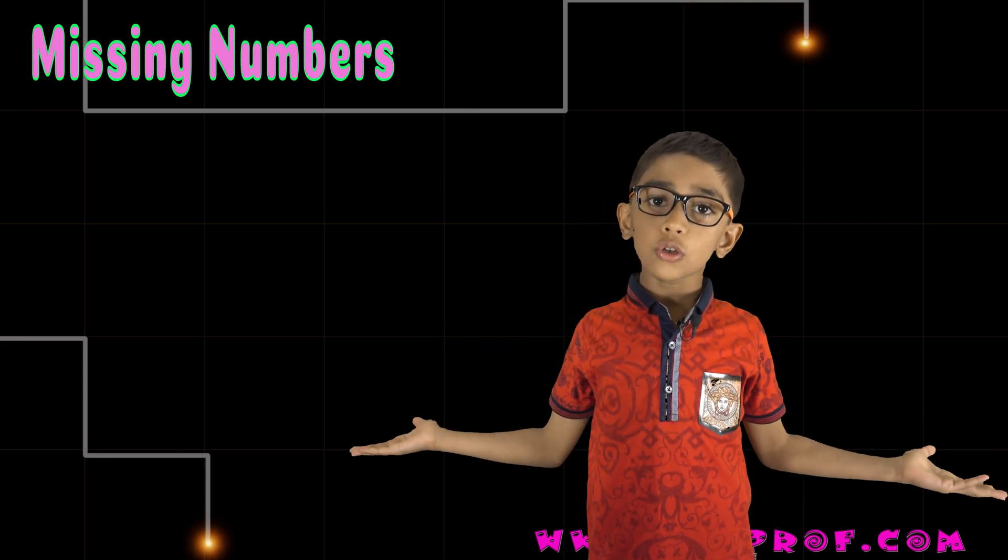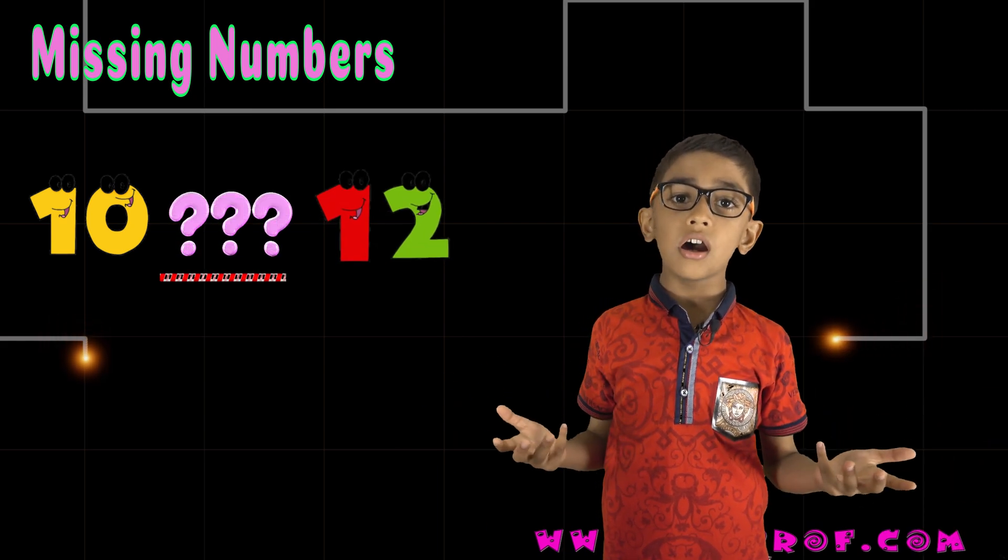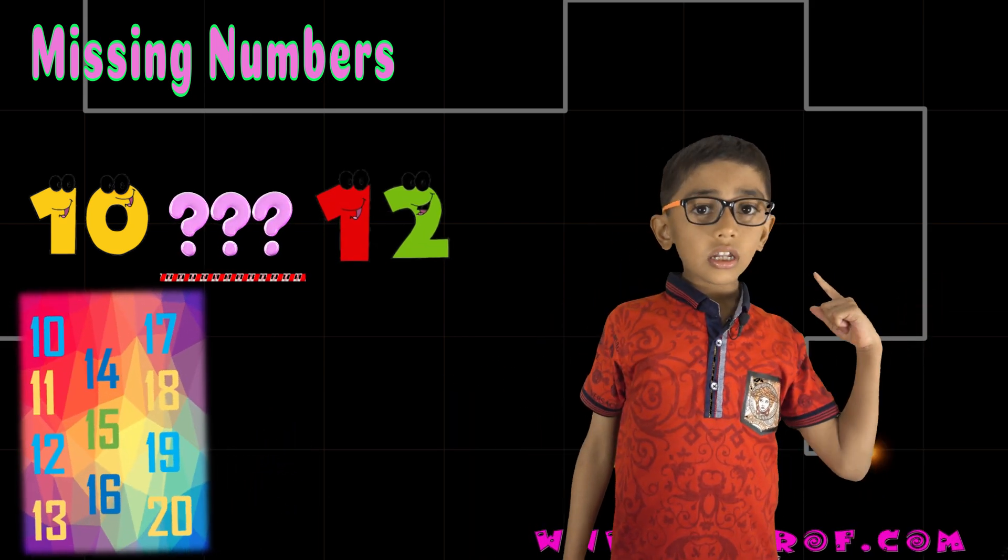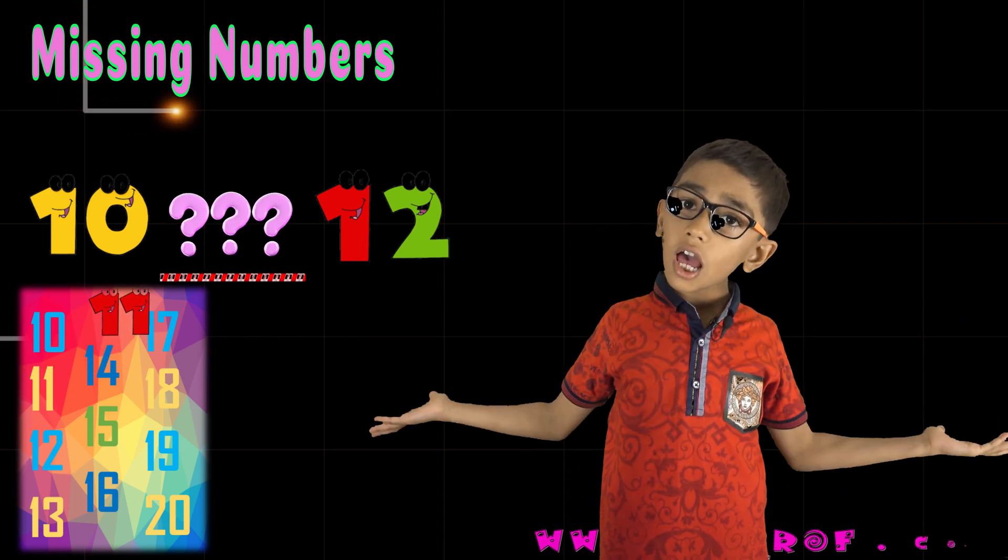What are missing numbers? Let's do them. 10 and 12. What is the missing number? 10, 11, 12. The missing number is 11.